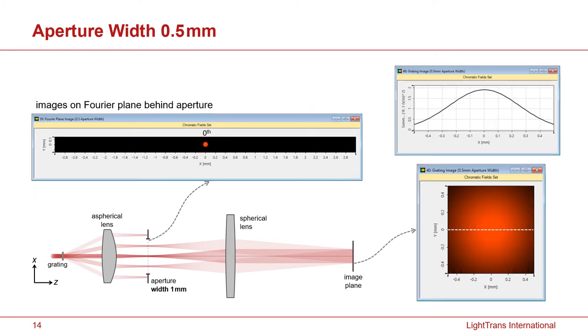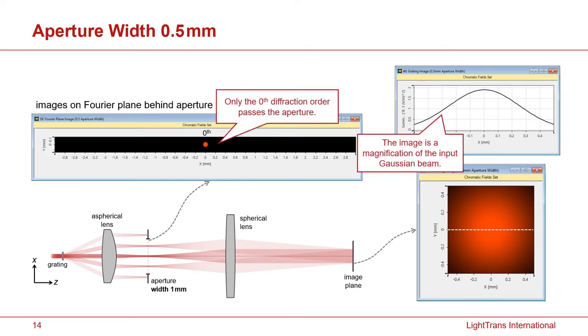Finally, if I make the aperture so small with a 0.1mm width that only allows the zeroth order of this diffracted light to go through the system, now in the image plane you see nothing but a magnified Gaussian beam. And there's no image. It exactly corresponds to what Abbe has predicted hundreds of years ago.